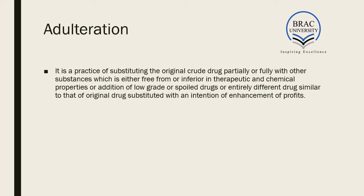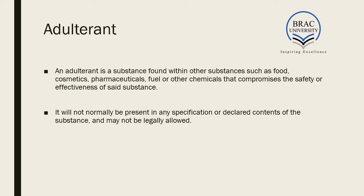The term adulterant is one we will use very often going forward. An adulterant is a substance found within another original substance — such as food, cosmetics, pharmaceuticals, fuel, or other chemicals — that compromises the safety and effectiveness of said substance. Mixing an adulterant with the original product compromises its safety, effectiveness, and even therapeutic properties. It will not be present in any specification or declared as a content, and may not even be legally allowed. Adulterants can be useless, harmful, or legally prohibited.